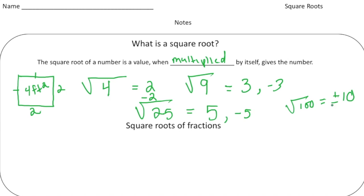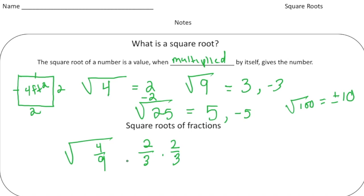There are also square roots of fractions. For example, the square root of four-ninths: I know two times two gives us four and three times three gives us nine, so two-thirds times two-thirds gives us four-ninths. That means the square root of four-ninths equals two-thirds — but it could also be negative two-thirds.